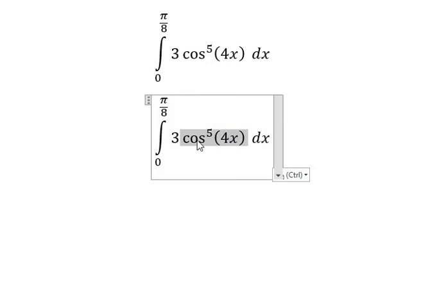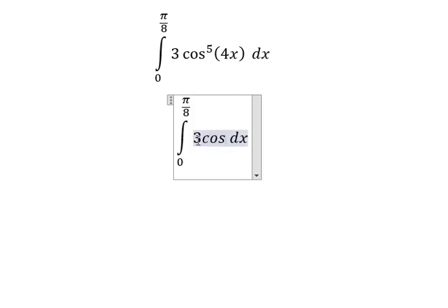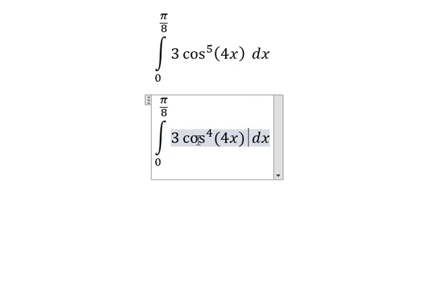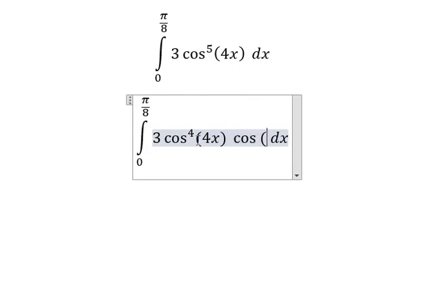About this one, we can write cosine 4x to the power of 5 as cosine to the power of 4 of 4x multiplied by cosine 4x.